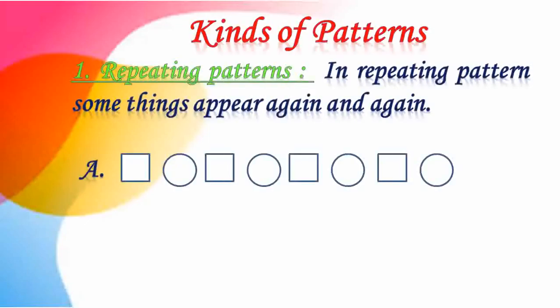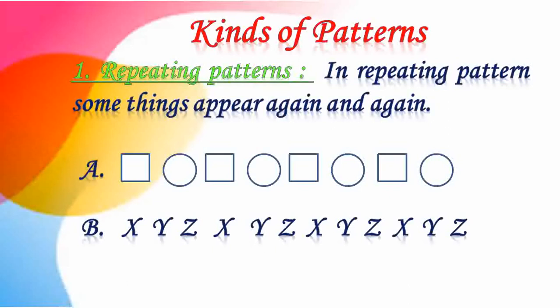Now we will start with the first pattern, that is repeating patterns. In repeating patterns, some things appear again and again. In the first example, the shapes are: square, circle, then again square, circle, square, circle — the shapes are repeating. The second example is also the same.